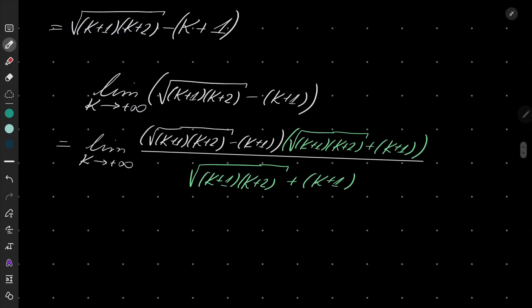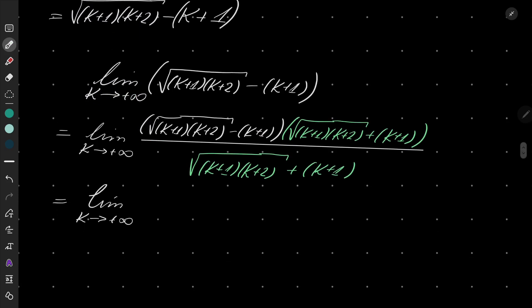If I do that, I have limit as capital K goes to infinity of what exactly? Well, in the numerator I now have a minus b times a plus b. So it's just (K+1)(K+2) minus (K+1) squared.